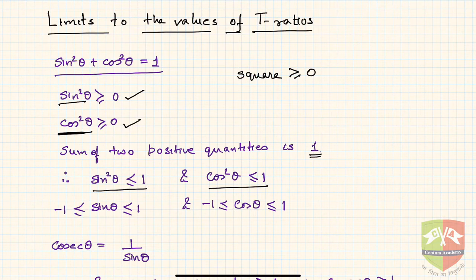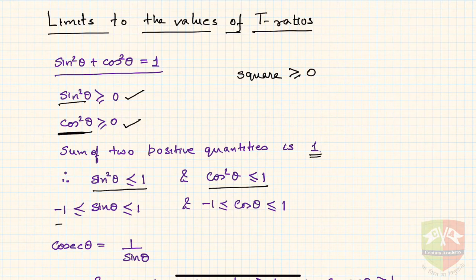Now since sin²θ ≤ 1, if the square of anything is less than or equal to one, it always means the value itself lies between minus one and plus one.